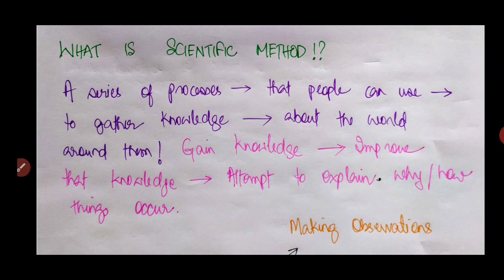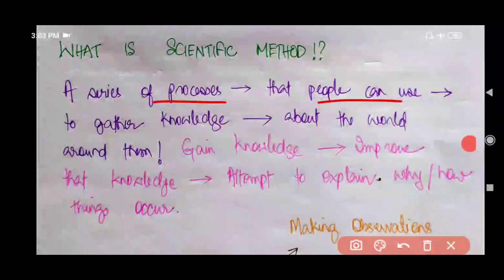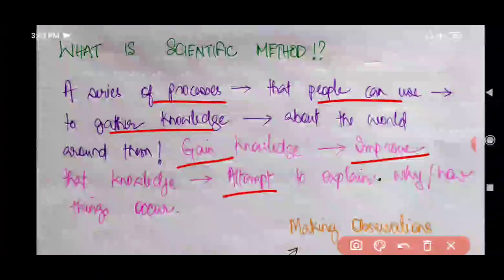So let us learn what scientific method really means in simple words. It is a series of processes that people can use to gather knowledge about the world around them. In a scientific method one gains knowledge, improves that knowledge, and attempts to explain why or how things occur the way they do.